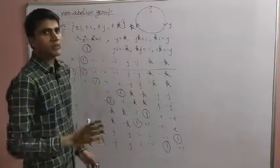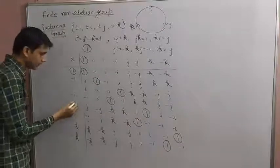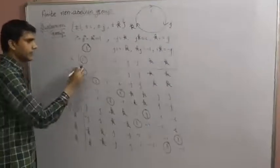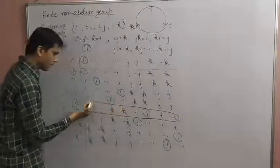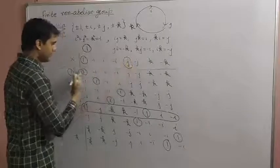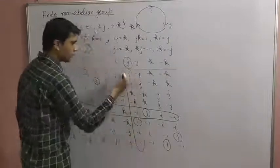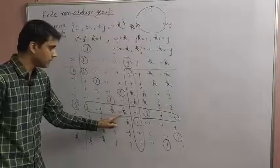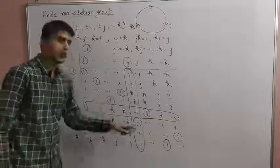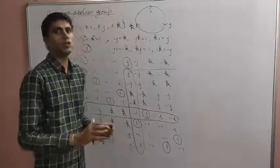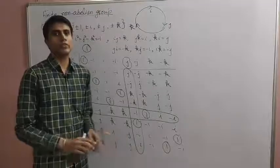To check commutativity: compare the row and column for the same element — for example, when i multiplies from the left versus from the right. The row and column do not match (e.g., i·j = k but j·i = -k), so this group is not commutative. Therefore the quaternion group is an example of a finite non-abelian group.